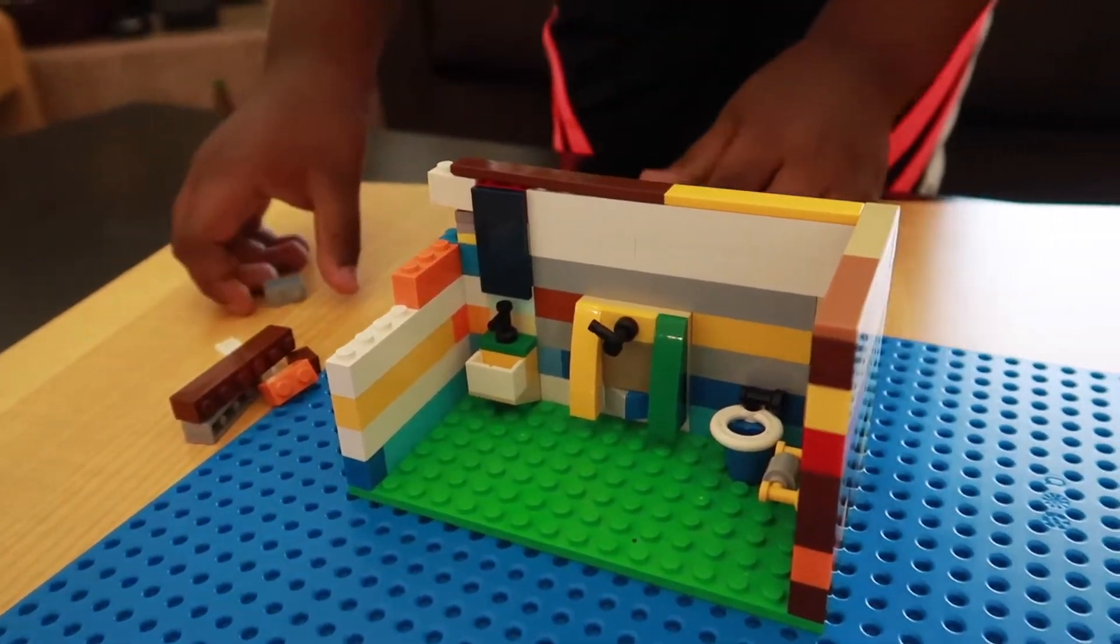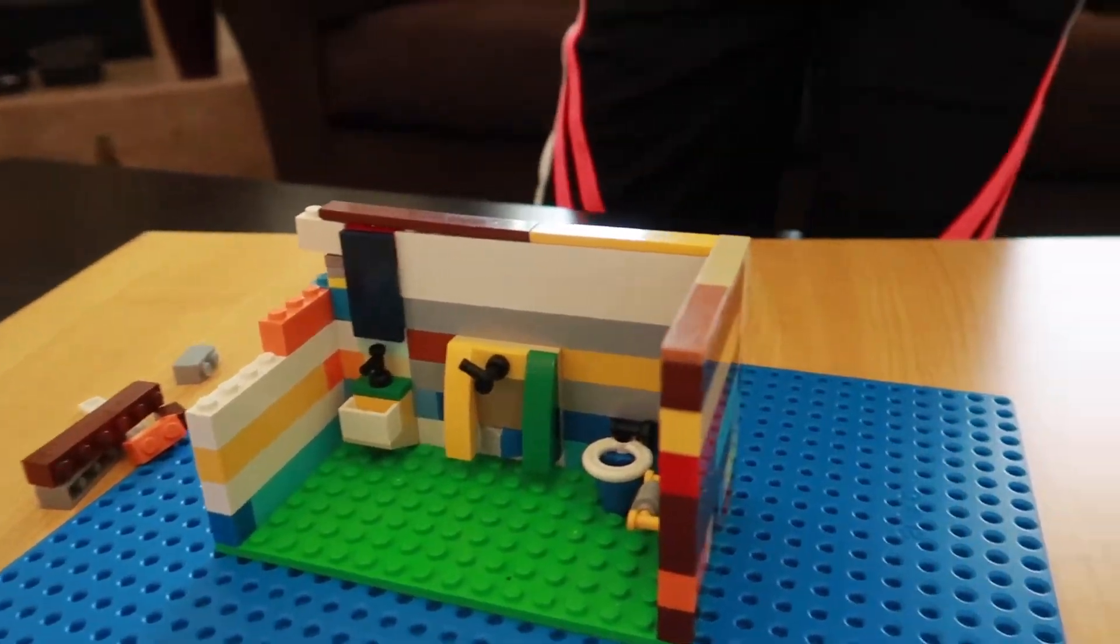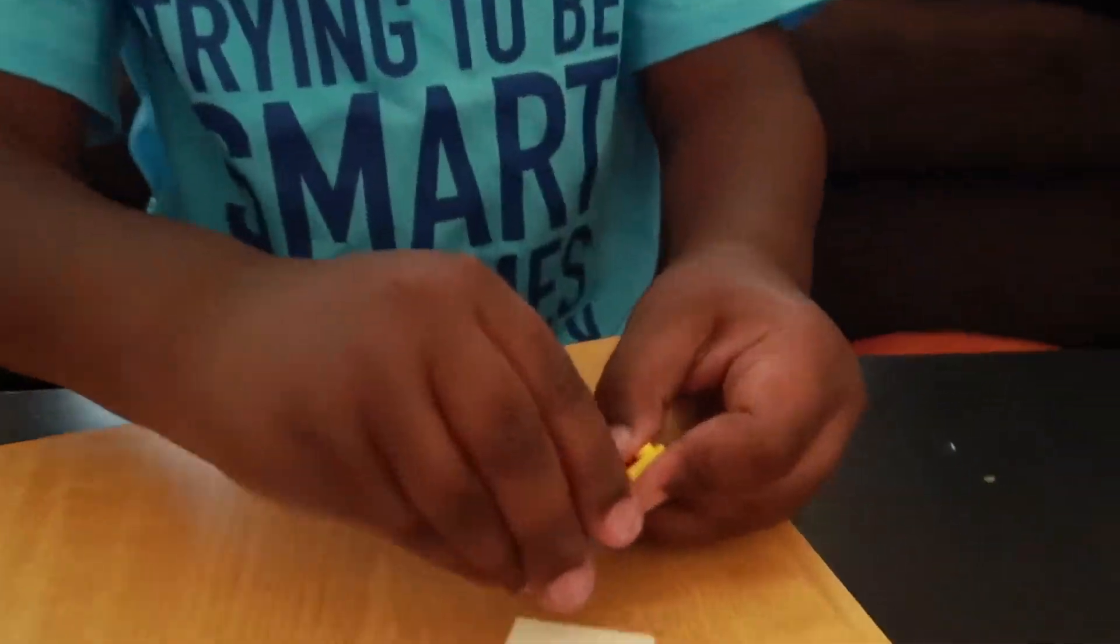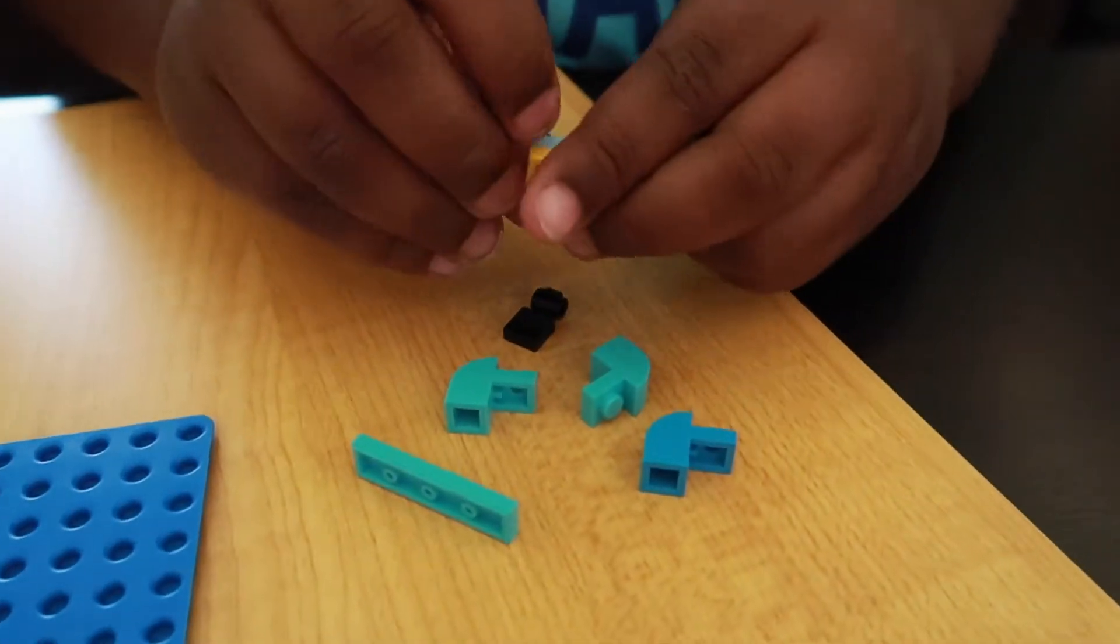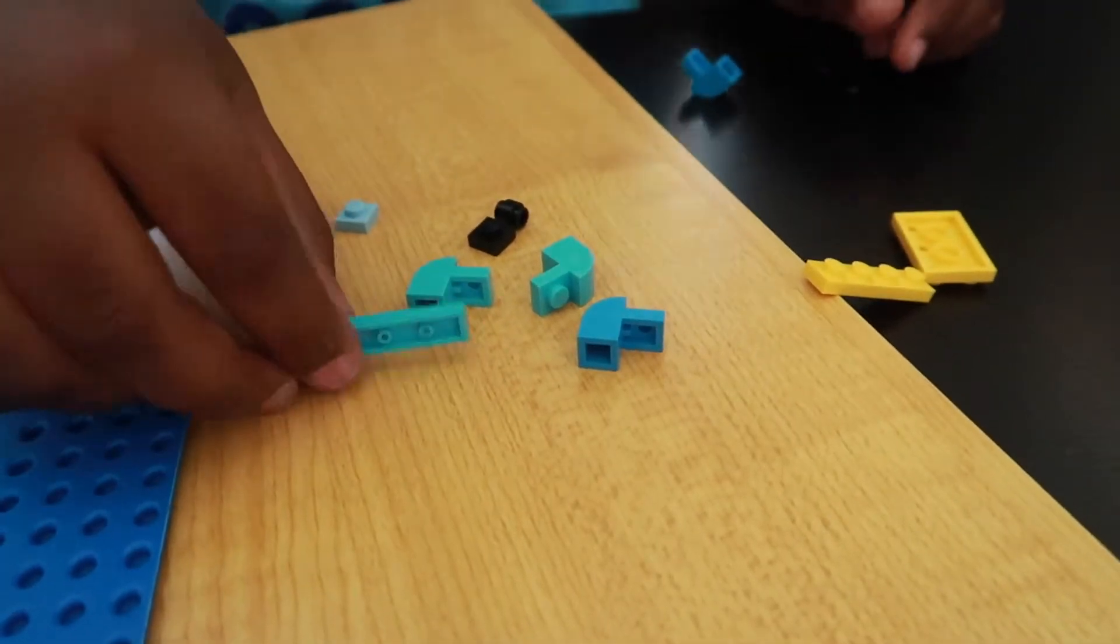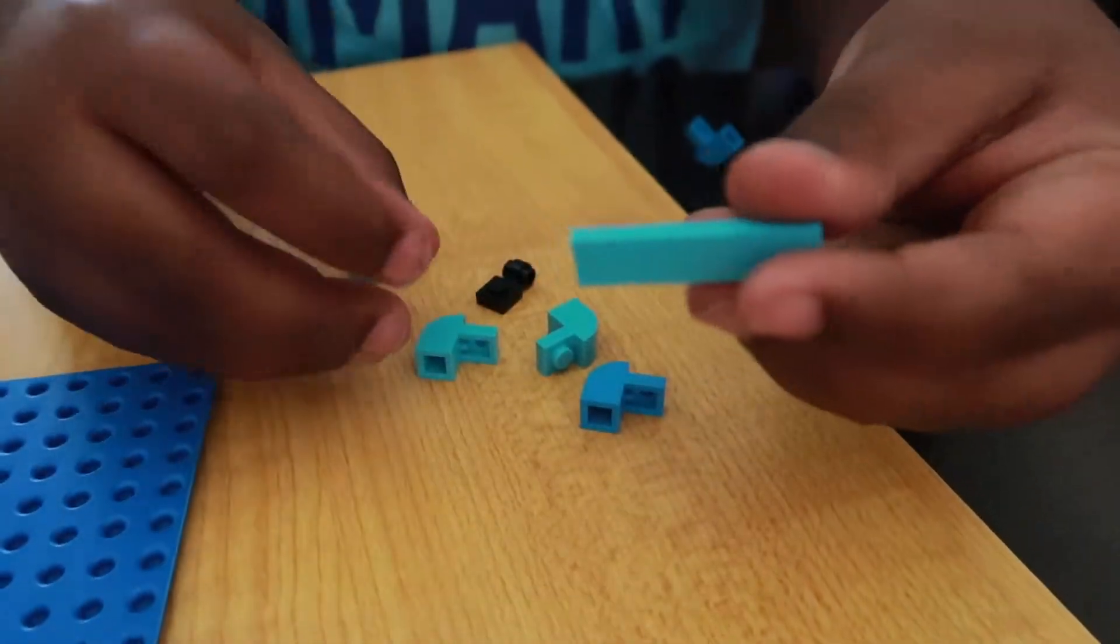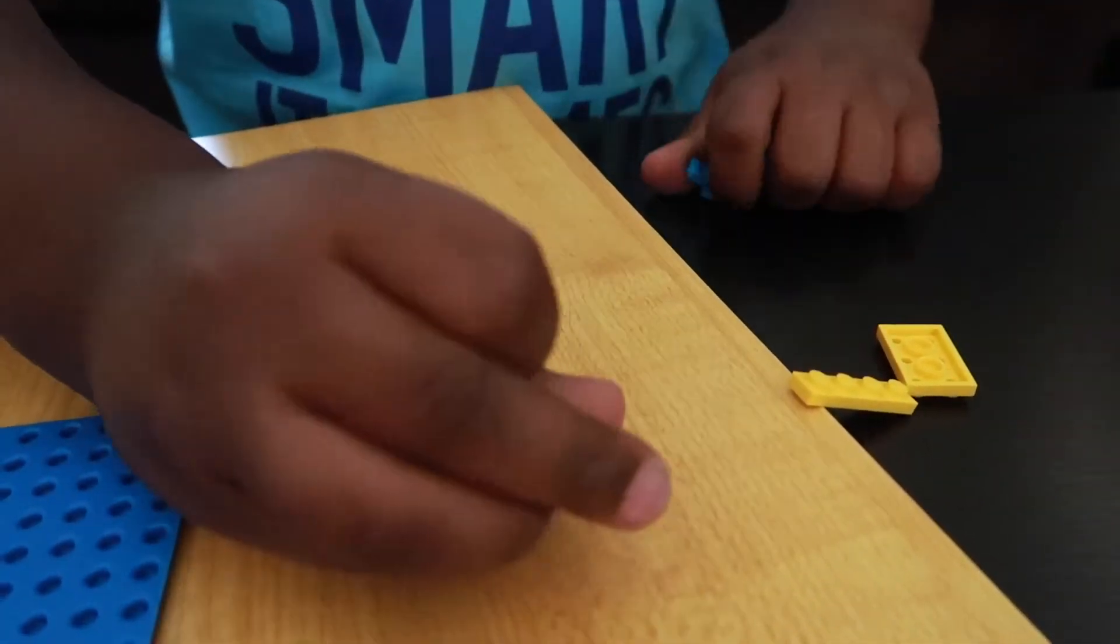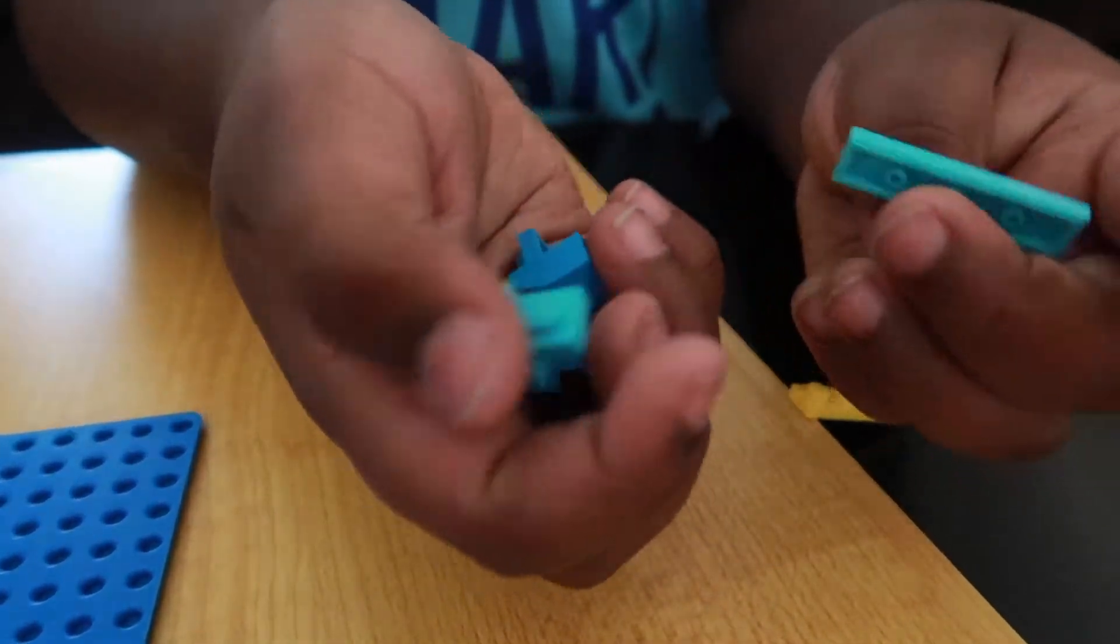So I'm just going to show you how to build this, the toilet paper dispenser. So first you need one of these tiles, then you need one of these one by one pieces with a bow.